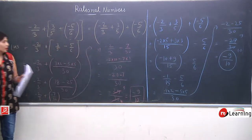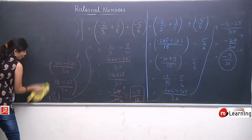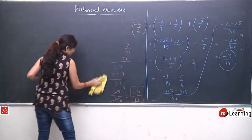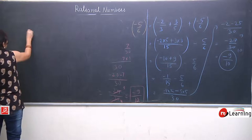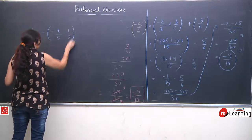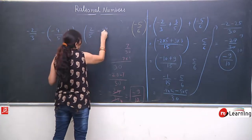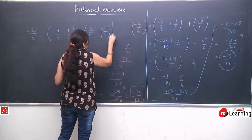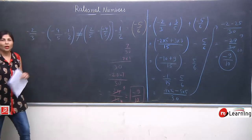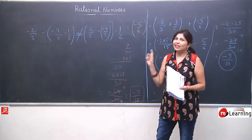Aap subtraction ke liye — main aapke liye work chhodti hoon. Main ek question de rahi hoon: minus 2 upon 3 minus (minus 4 upon 5 minus 1 upon 2) and bracket position changed: (minus 2 upon 3 minus minus 4 upon 5) minus 1 upon 2. Kya yeh equal honge ya not equal — it is work for you. Aap isko solve karke dekhenge ki LHS aur RHS equal aa rahe hain ya nahi.